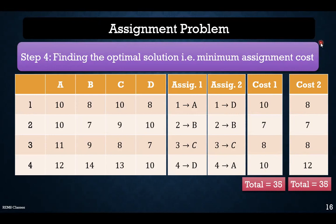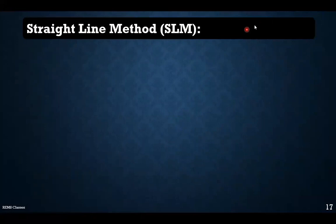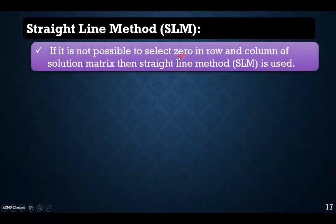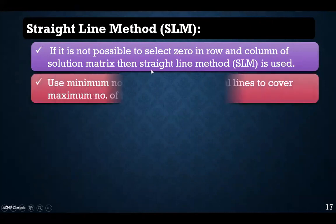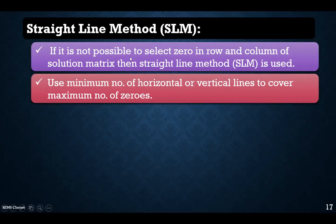Some parts of the Hungarian method remain to be discussed, particularly plotting horizontal lines — the straight line method. Sometimes the solution is not optimal. If it is not possible to select a zero in every row and column, we use the straight line method, which is a part of the Hungarian method. In this method, we use the minimum number of horizontal or vertical lines to cover the maximum number of zeros.